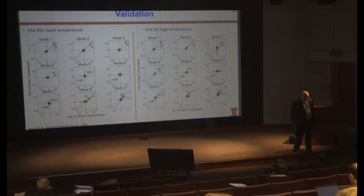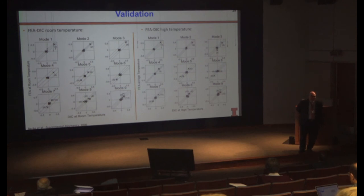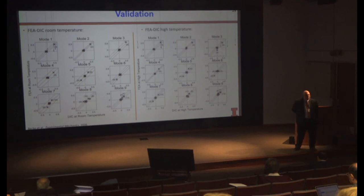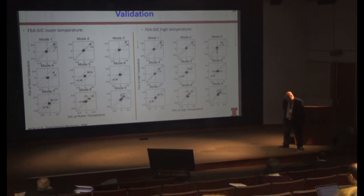The frontier of data science and machine learning in our area is automated physics discovery — people have had successes using interpretable machine learning models and symbolic regression to spit out equations. That's where we're headed, and it might supplant what we're doing now — trying to answer more basic questions. Hopefully I'll be retired by then. Any other questions? One comment: we should all keep thinking about the Boeing 737 MAX. Indeed. Thank you all.